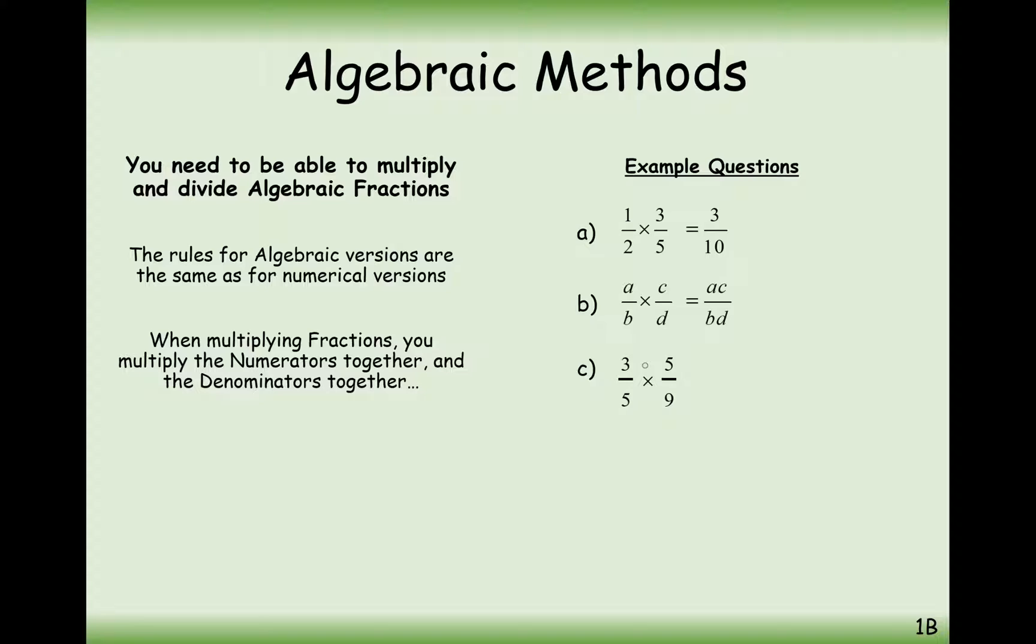In this case here, if it's 3 over 5 times 5 over 9, the way we can simplify this is, well, we can times them to start with. So 3 times 5 is 15, and 5 times 9 is 45. Cancel down common multiples of 15 on the top and bottom and we get 1 third.